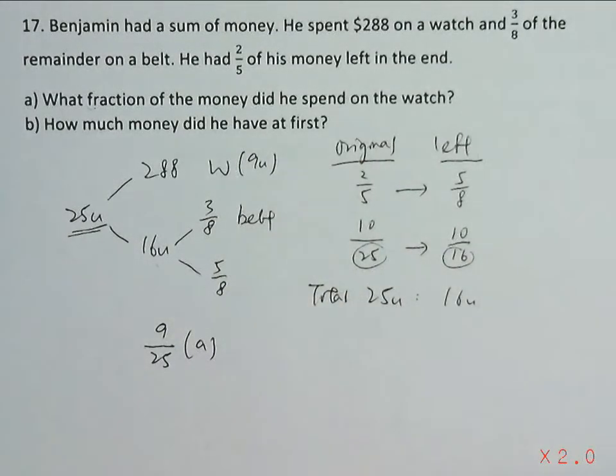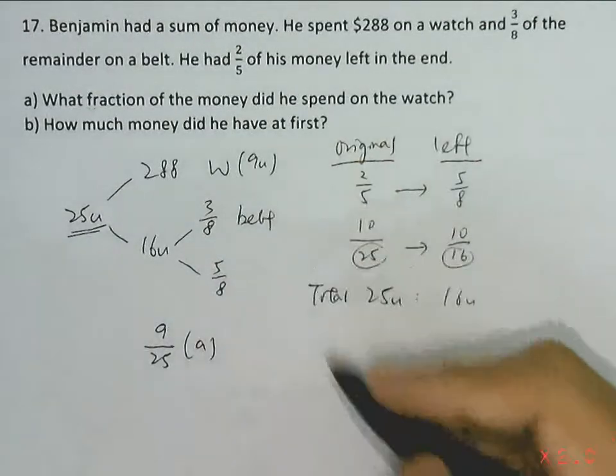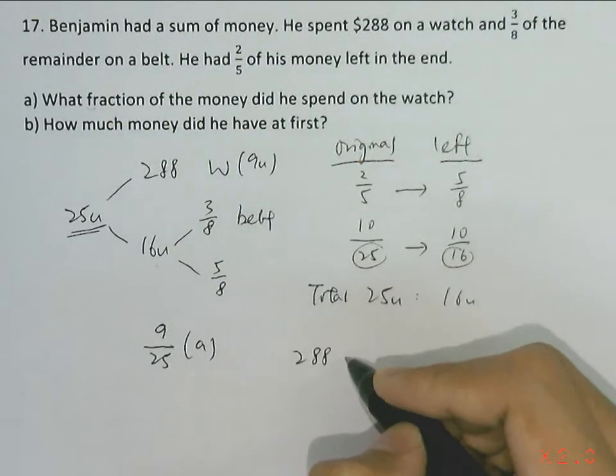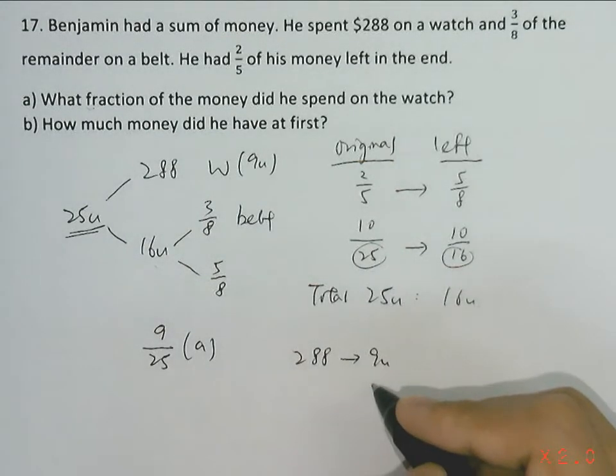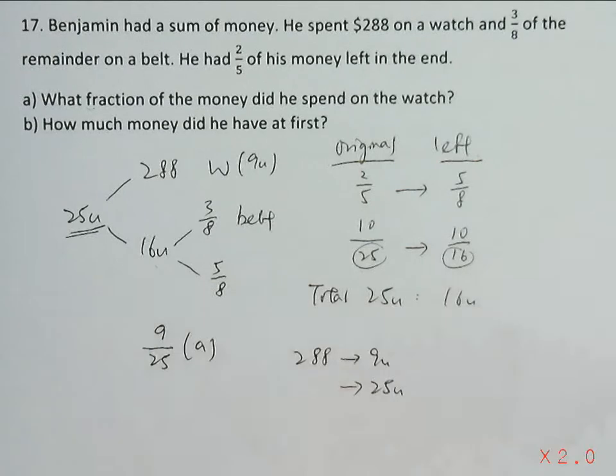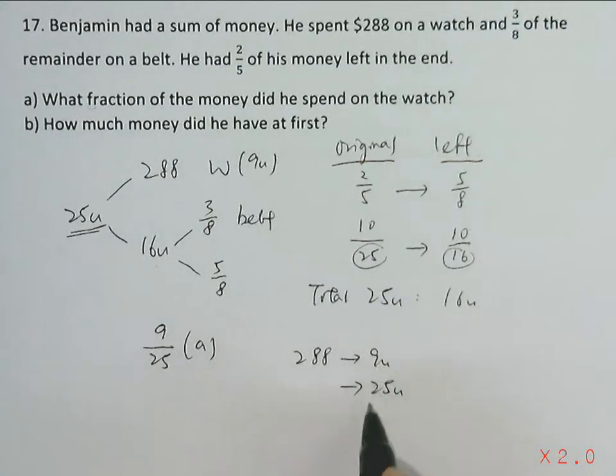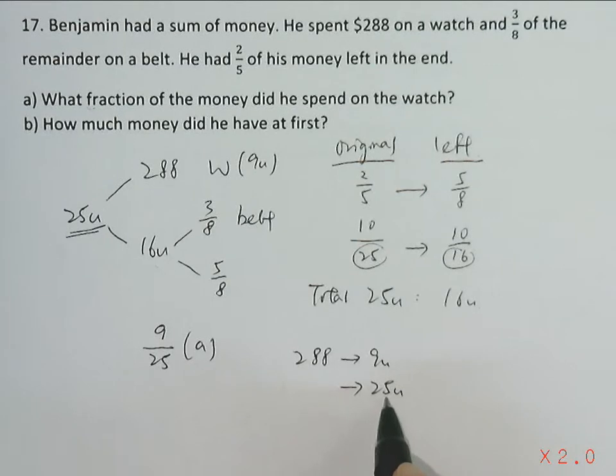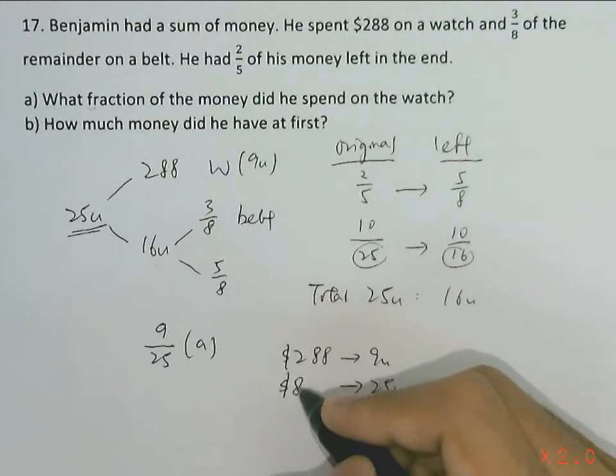Part b: How much money did he have at first? If $288 is 9 units, to find 25 units, which is the amount he had at first in total, we do 288 divided by 9, then multiply by 25. That will give us our answer for part b, which is $800.